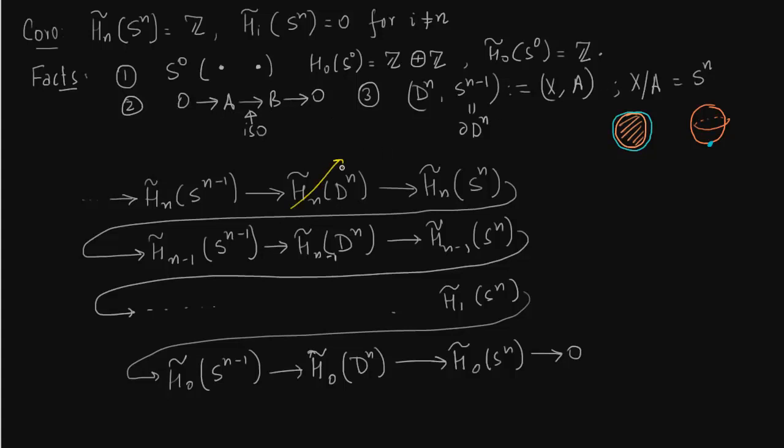So now you notice in this sequence the disk is homotopically equivalent to a point, therefore its homology groups are zero. So let us mark it out. So what we get is what we have written into an isomorphism.